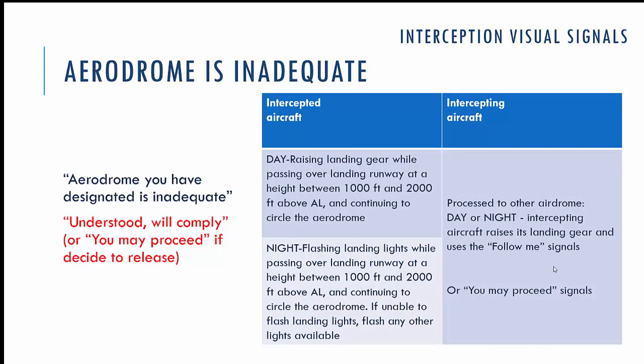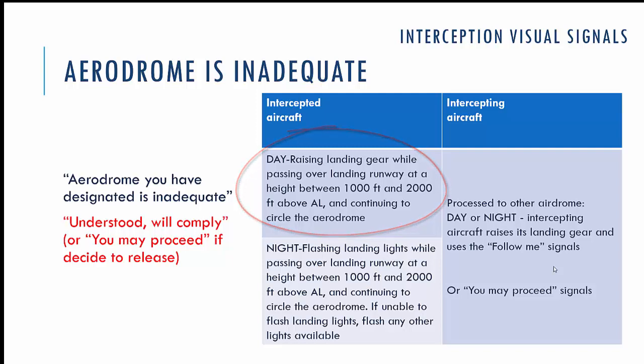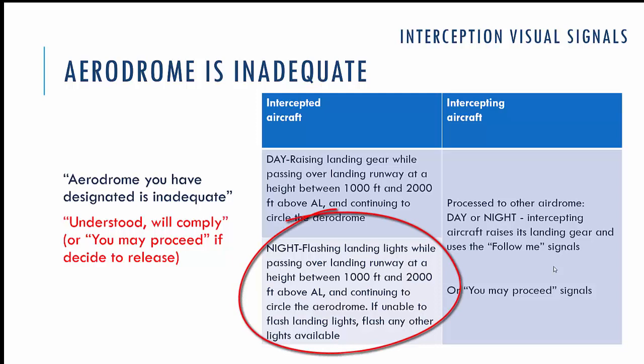At night time, these visual signals are accompanied by turned-on steady landing lights. If you assess the aerodrome and determine that landing is impossible, you give the visual signal 'aerodrome you have designated is inadequate.' In daytime, this looks like retracting landing gear while passing over the landing runway at a height between 1,000 and 2,000 feet above aerodrome level, then continuing to circle the aerodrome. At night time, instead of retracting landing gear, you flash your landing lights while passing over the landing runway and continue to circle.